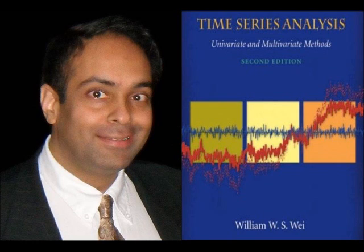For example, what if your omega is (1, 3, 2)? What's the time series, since we let ZT be twice the value of the tossed die? If you get 1, the value will be 2. If you get 3, the value will be 6. If you get 2, the value will be 4. So the realization according to this omega is (2, 6, 4). The total, as I said, is 216 possible realizations.